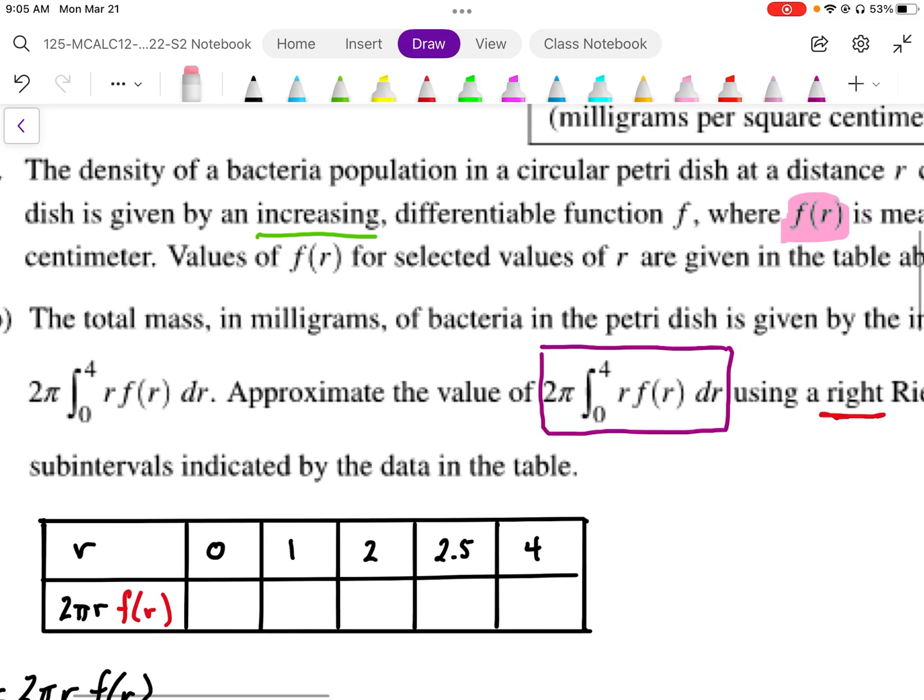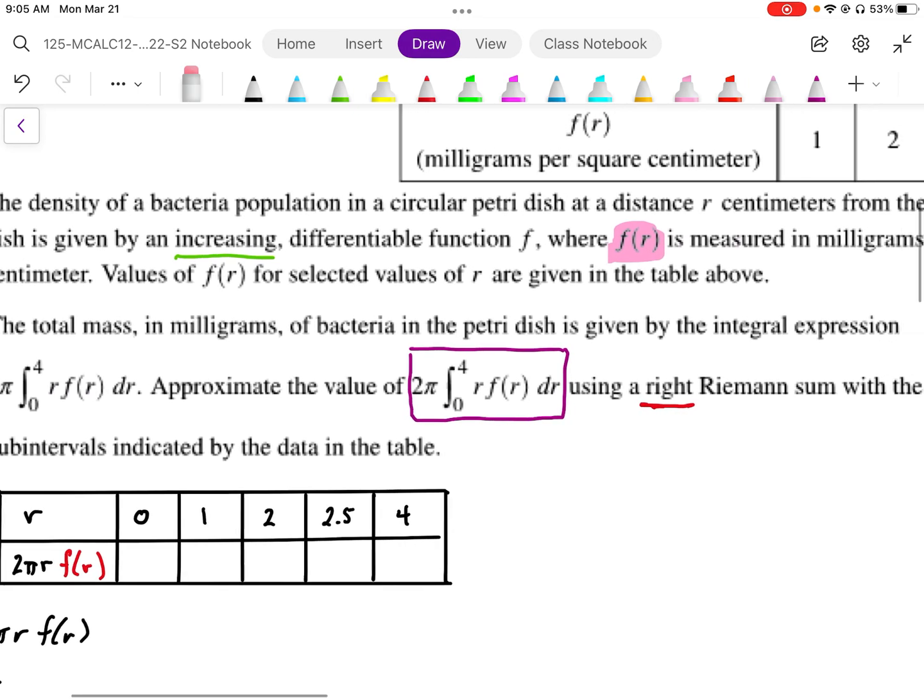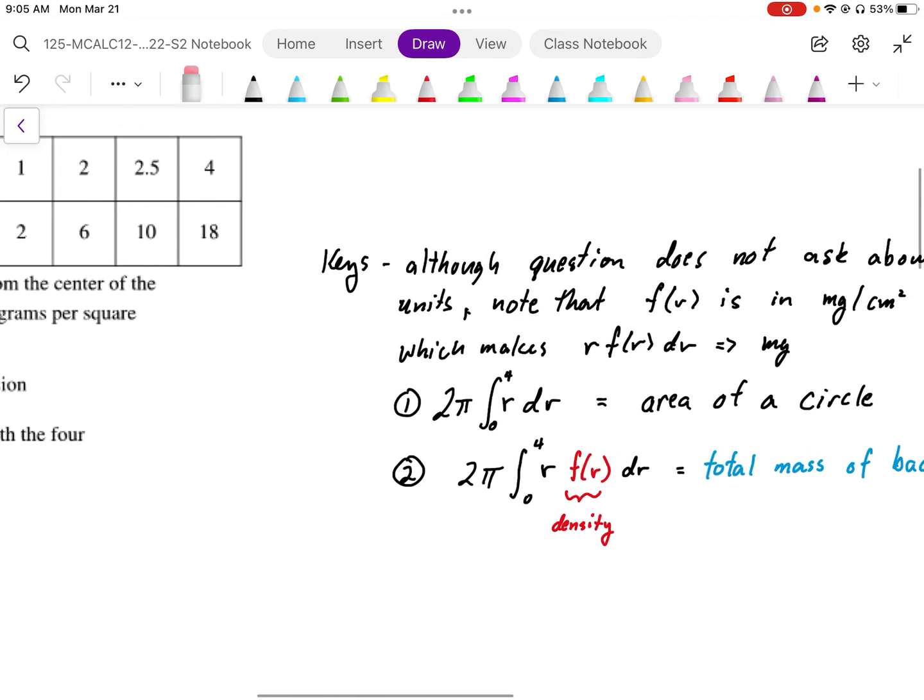We need to approximate this using values in a right Riemann sum with the given subintervals.